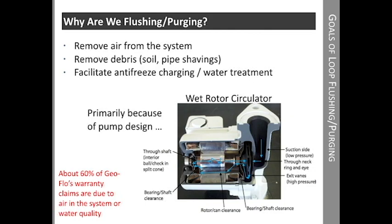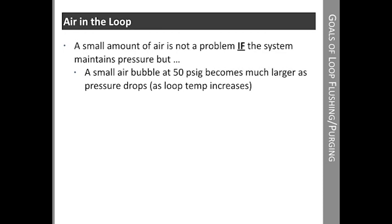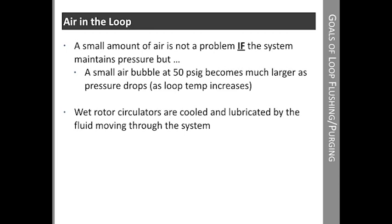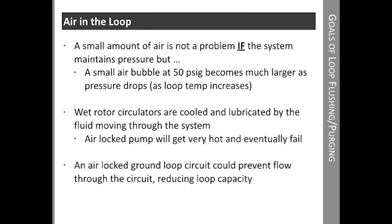Purging the system of air and flushing the system of debris is very important. A small amount of air in the system is not a problem if it's under pressure, but a small bubble at 50 psi becomes much larger as the pressure drops, which occurs as the pipe expands when the loop temperature increases. Wet rotor circulators are cooled and lubricated by the fluid moving through the system. The larger bubble could certainly air lock a pump. When the pump is running dry, it gets very hot and will eventually fail. A ground loop circuit could also become air locked, preventing flow through the circuit and reducing loop capacity. The lack of flow through one of the circuits will act like a smaller loop and could result in a hot or cold loop.